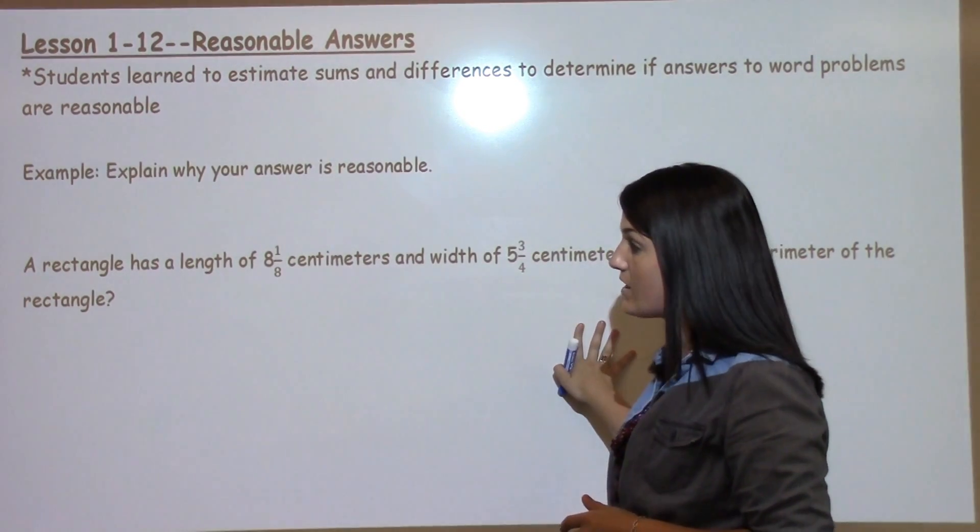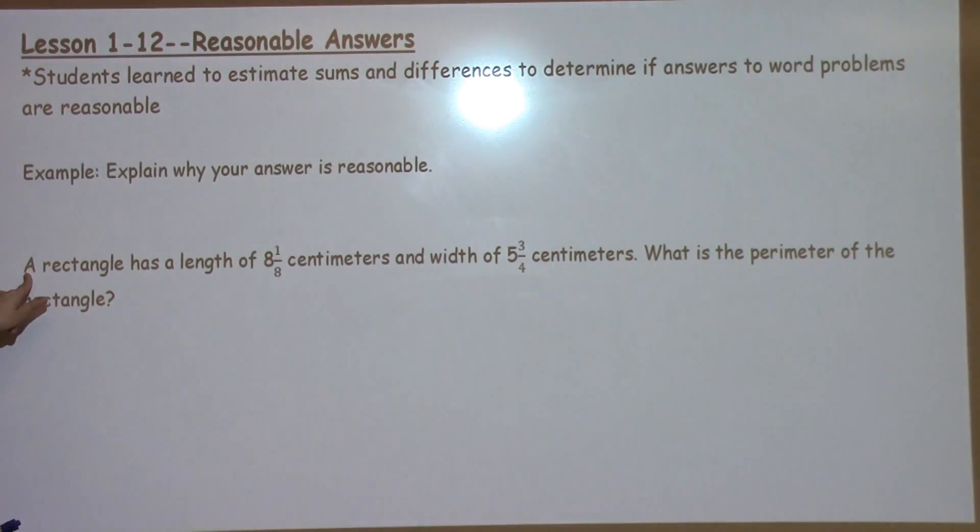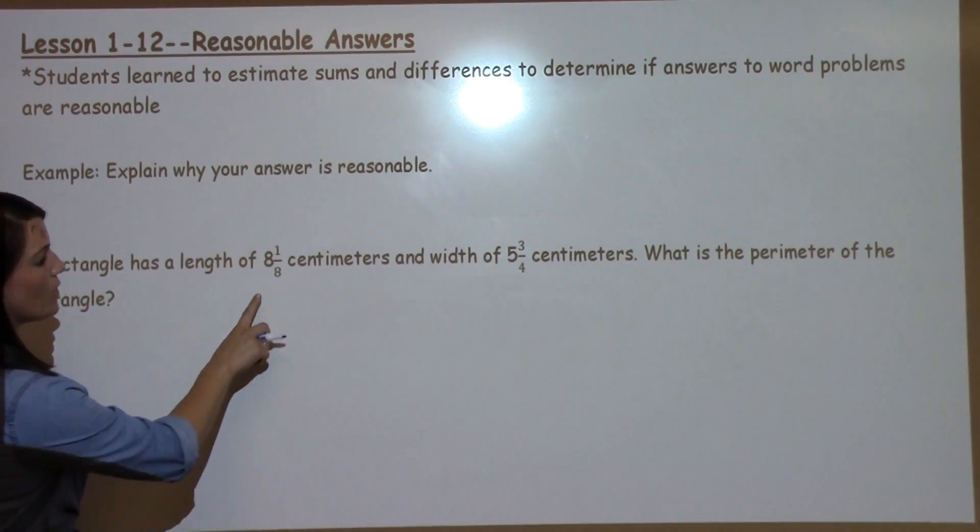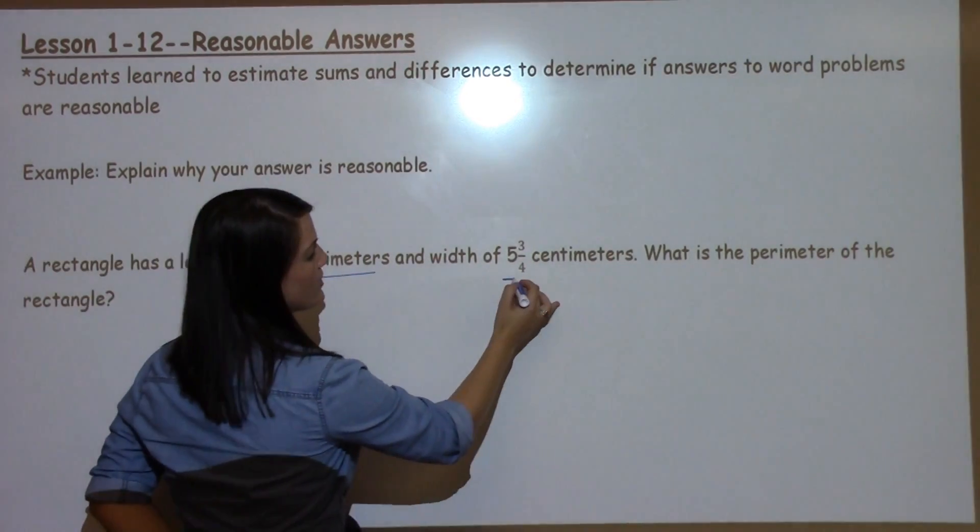One example we're going to look at has a few different steps, so make sure that you pay close attention. A rectangle has a length of 8 and 1/8 centimeters and a width of 5 and 3/4 centimeters.